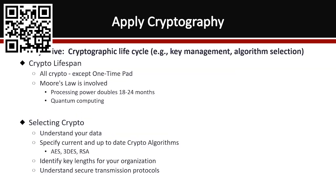In this objective, we're going to talk about cryptographic life cycle — that's key management, algorithm selection, and examples. When you're dealing with cryptography, there's a lifespan that goes into this. Everything but the one-time pad, which is basically a one-time crypto key, is susceptible to crypto lifespan. Moore's law is basically pushing this, where processing power doubles every 18 to 24 months.